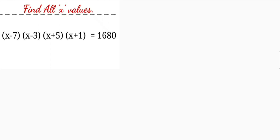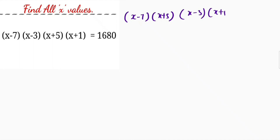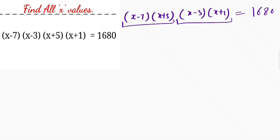So first we will do some rearrangement to solve this question. For that I will multiply (x minus 7) with (x plus 5) and (x minus 3) with (x plus 1), which is equal to 1680. Now let me multiply these two pairs together.